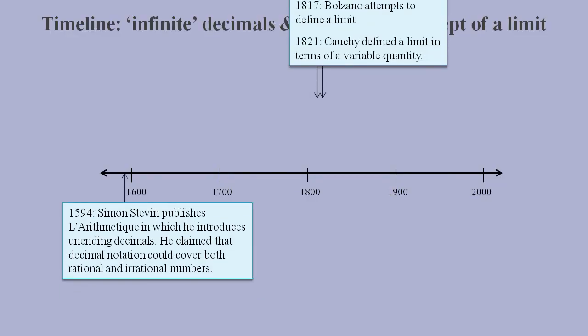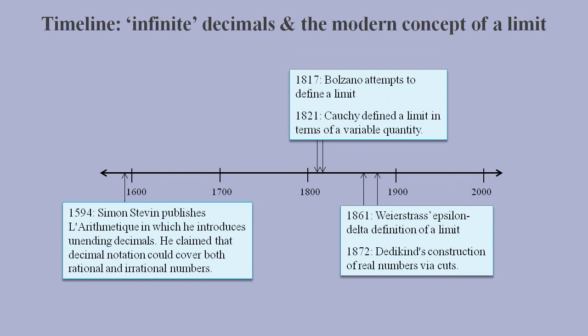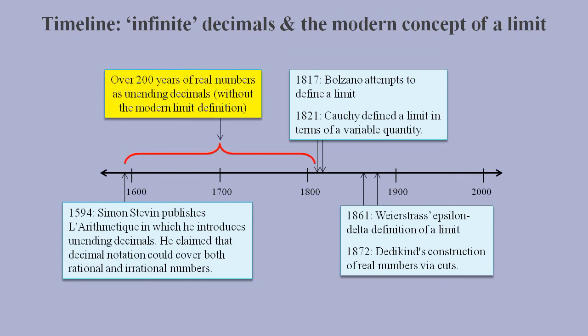When we examine the timeline for the development of the modern concept of a limit, we find there was a period of over 200 years from the introduction of unending decimals by Simon Stevin in 1594, before several mathematicians devised the limit approach to real numbers. If the limit argument is so intuitive, then why did it take so long to be devised?